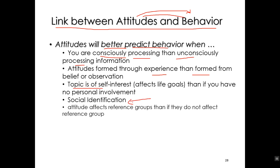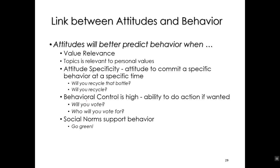Social identification: if the attitude deals with some part of your social identity, there's a stronger link. If you are a Republican, that's part of your social identity, so your attitude about voting for Trump will correlate very well with your actual voting behavior. Likewise, if the topic is relevant to your personal values — the core things you believe in — then the attitude expressed will correlate more with the behavior that is expressed.